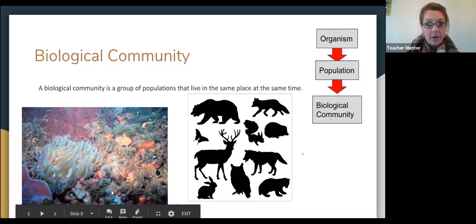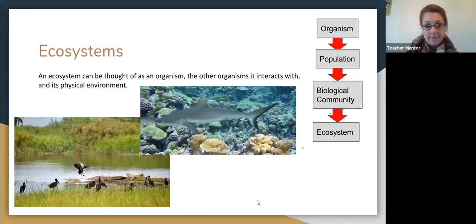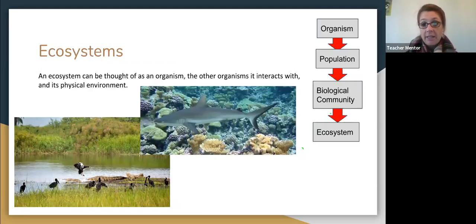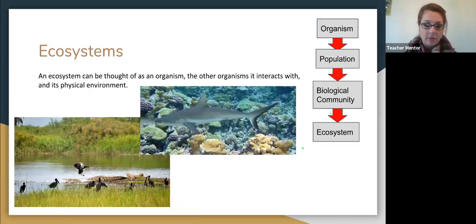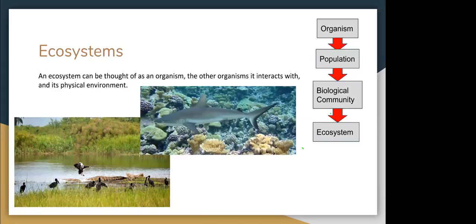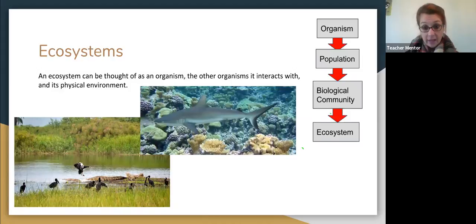So our next level is going to be a biological community. So a biological community is going to be a group of populations that live in the same place at the same time. So I couldn't find, for obvious reasons, a picture of a real deer with a real bear. But we can picture these animals living together in the same community at the same place at the same time. Tried to get a good shot of like a coral reef with all of its organisms and all of its populations, just so you kind of get the idea. It's a group of populations living in one place at the same time.